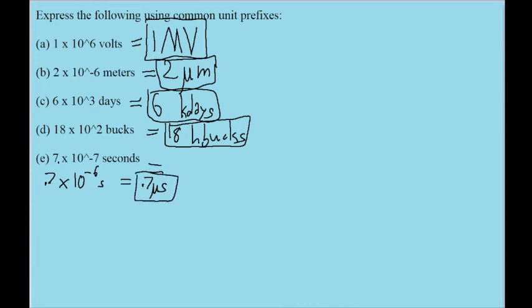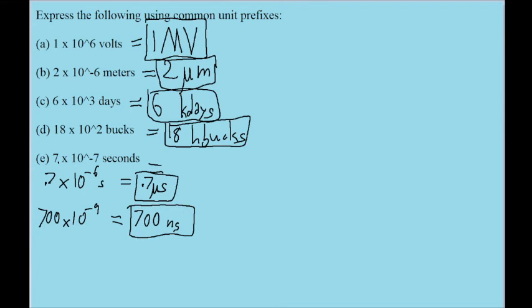So that is our answer for part e. Alternatively, you could move the decimal two spaces to the right, so that it becomes 700 times 10 to the power of negative 9. In this case the number as a whole gets smaller because you've made the coefficient larger. We'd use the prefix nano, which is a billionth, corresponding to 10 to the power of negative 9. So we'd write 700 ns, since lowercase n is the prefix for nano. Either of those ways of writing the answer to part e are valid.